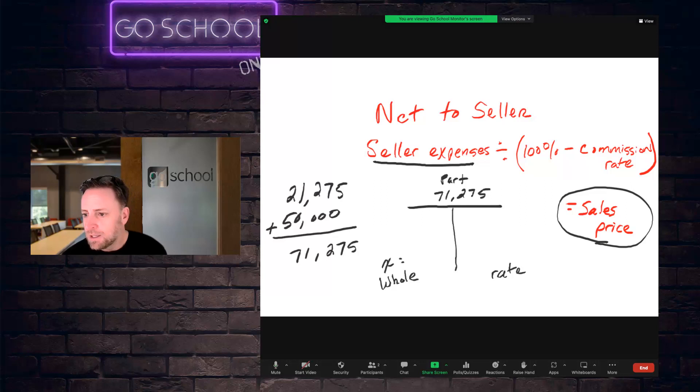The rate, again, we have in the question as 6%. And oftentimes where students go wrong here is they put 6%. But remember, in a net-to-seller problem, it's always going to be 100 minus the commission rate. So in that case, we're going to indicate 94% here. That's 100% minus 6% equals 94.